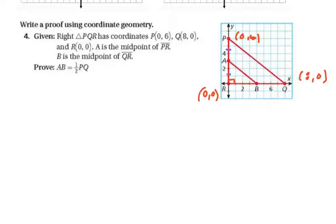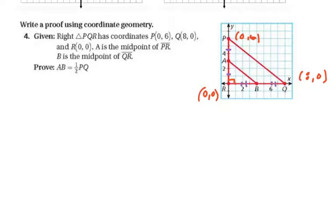A is the midpoint making equal lengths on that side, and B is the midpoint making equal lengths on the other. We need to prove that AB is half of PQ — meaning this segment here is supposedly half of that longer one. In order to do that, we are going to need each of the lengths.